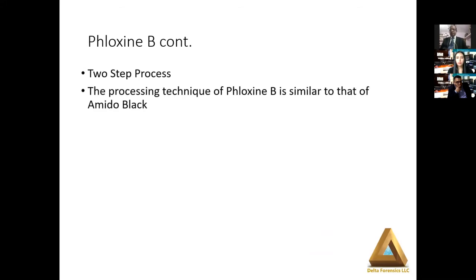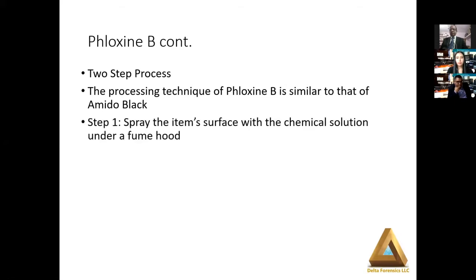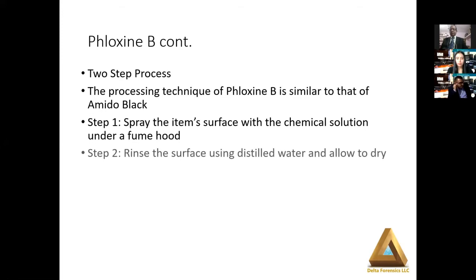Phloxene B is also a two-step process — spray and rinse, much like amido black. With leukocrystal violet, in the commercial versions it is now essentially a one-step process: it comes in three parts mixed together to make the stock solution, applied using a pump sprayer. When the mist contacts the blood it develops instantly, appearing purple. You must stop applying leukocrystal violet as soon as you see impressions developing, because continued application will cause it to bleed out and obscure detail. With phloxene B, you're spraying it — in the laboratory under a fume hood, though these chemicals are also very safe to use at a crime scene — and using distilled water for the rinse.